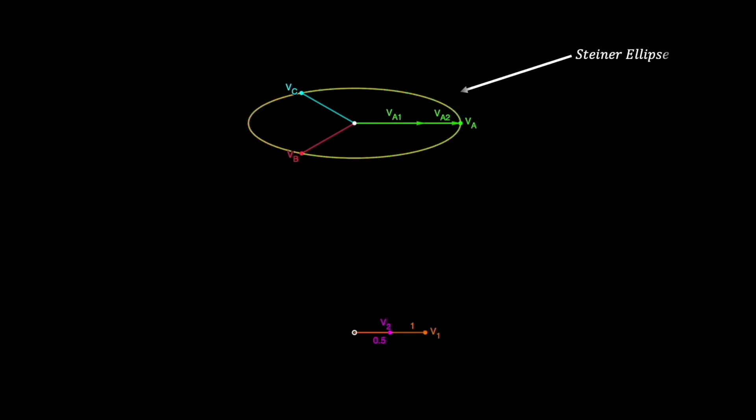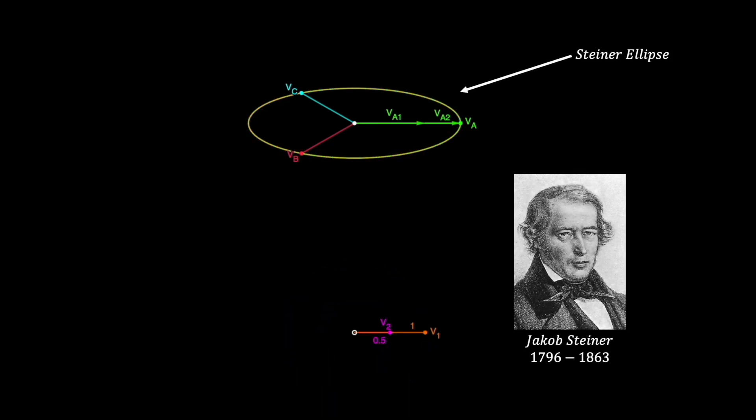This ellipse is known as the Steiner ellipse and was discovered by the mathematician Jacob Steiner, who lived in the 1800s.